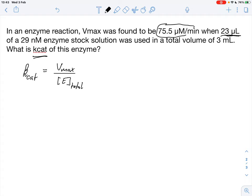Now we need to figure out what is our total enzyme concentration. We know that we have taken 23 microliters of the stock solution. So we put 23 microliters into our reaction and it gives us a total volume of 3 milliliters. And the stock solution had a concentration of 29 nanomolar.